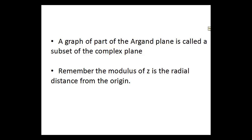When I talk about a subset of the complex plane, I mean a graph of part of the Argand plane, which is called a subset of the complex plane. The other thing you need to remember is that the modulus of Z is the radial distance from the origin — that is, the modulus of Z, which we use R, equals the square root of x squared plus y squared.